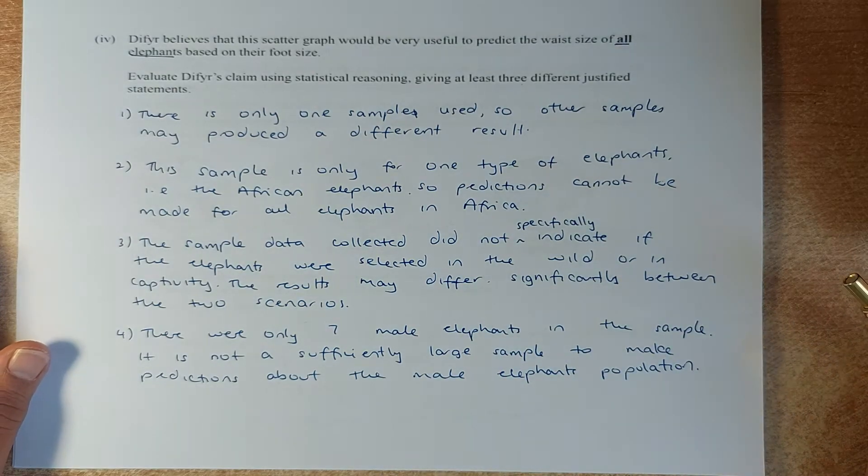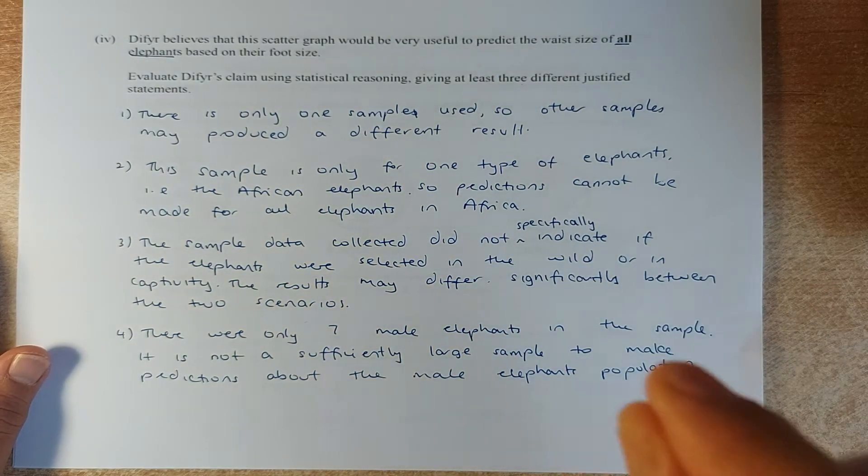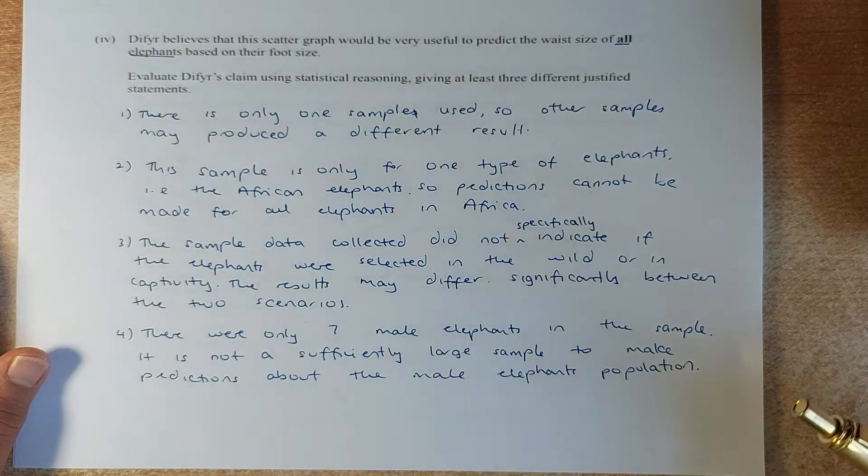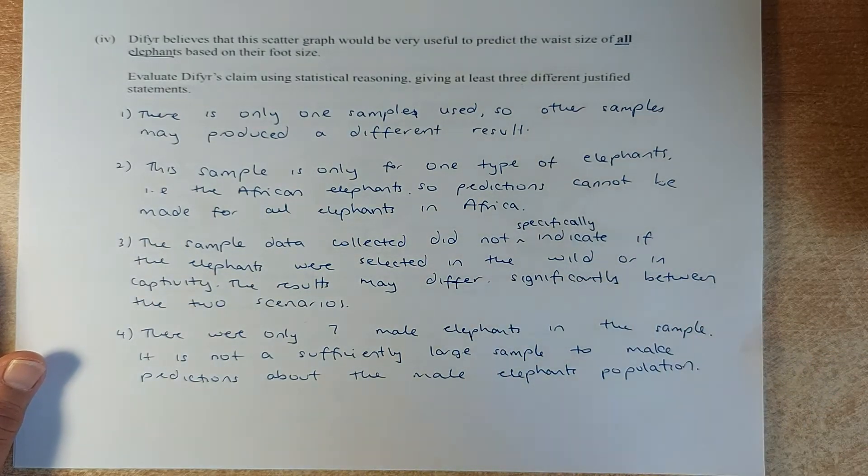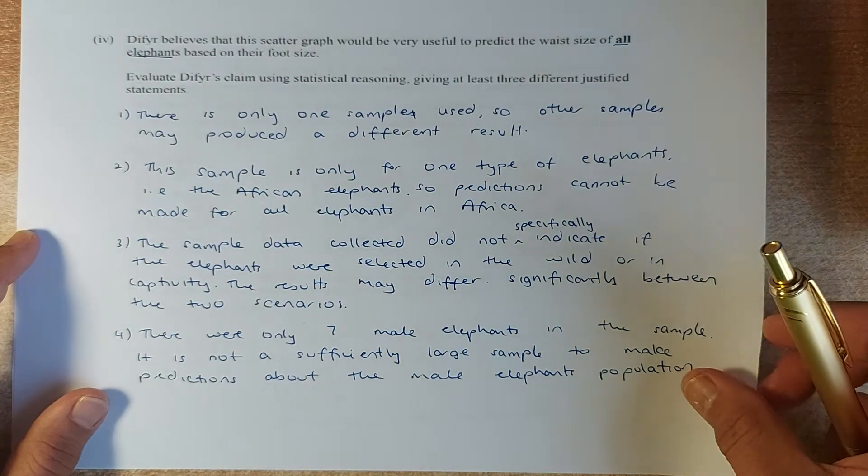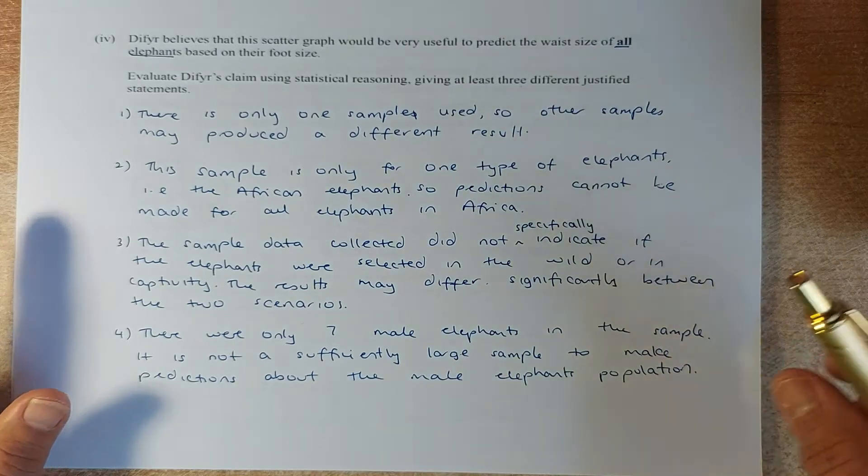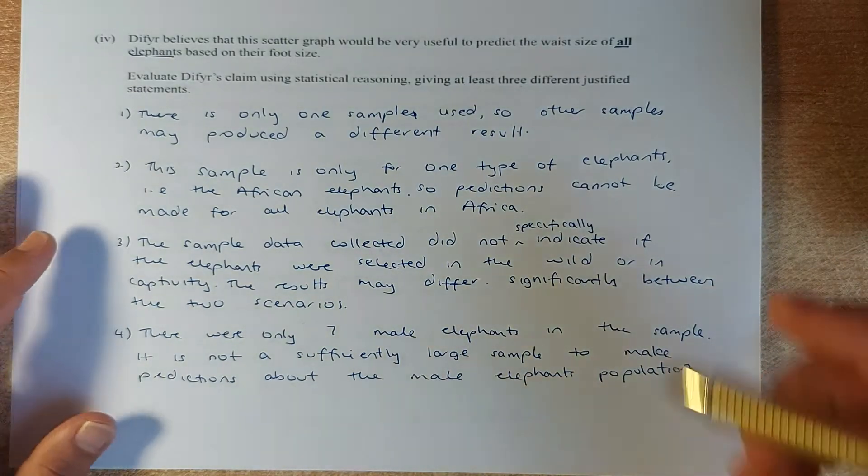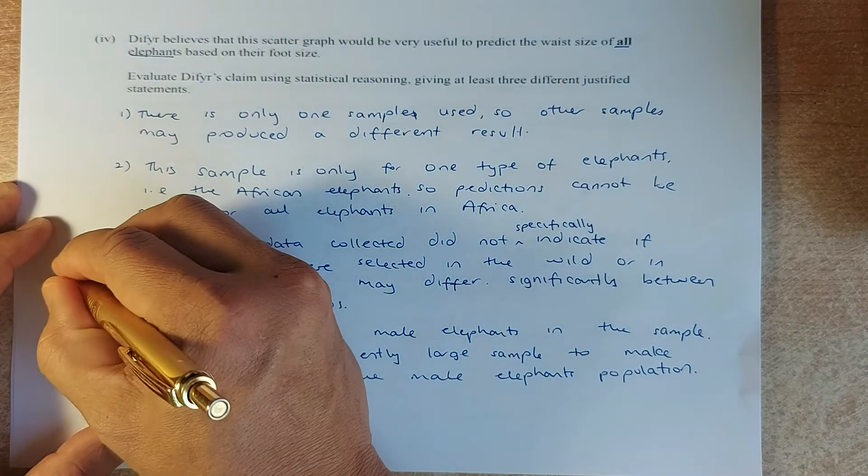And again, there were only seven male elephants. The square, black square, there's only seven. So we cannot use that data to make a prediction about the whole male elephants' population in Africa. So if you can answer three of the four valid points, you will get an excellence for this question.